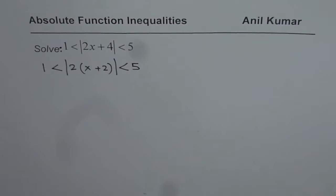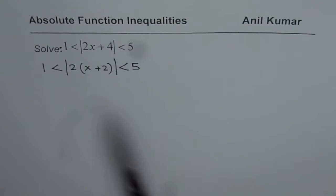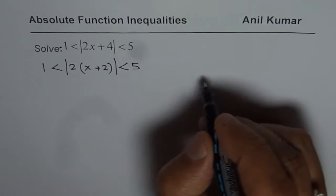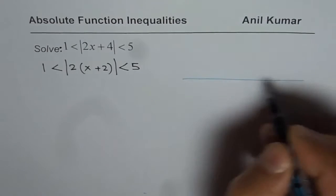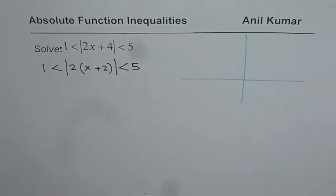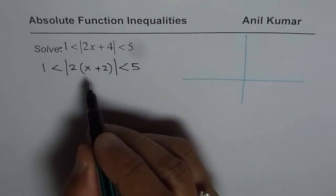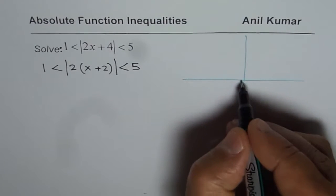You can see that the absolute function has been translated 2 units to the left. Let me sketch one here — just a very rough sketch. So the absolute function has been moved 2 units to the left.